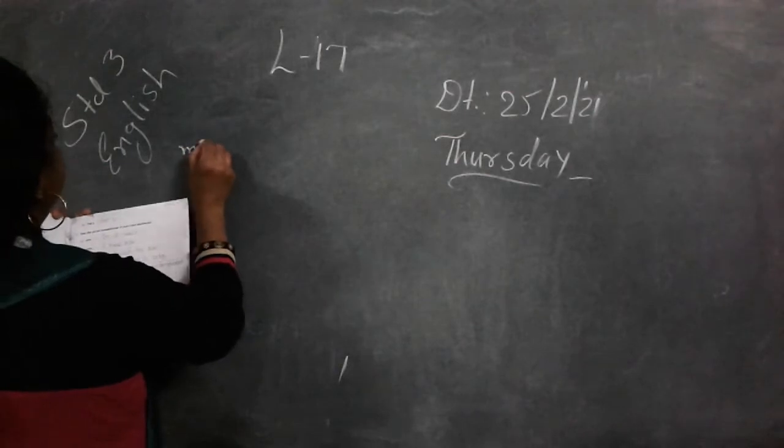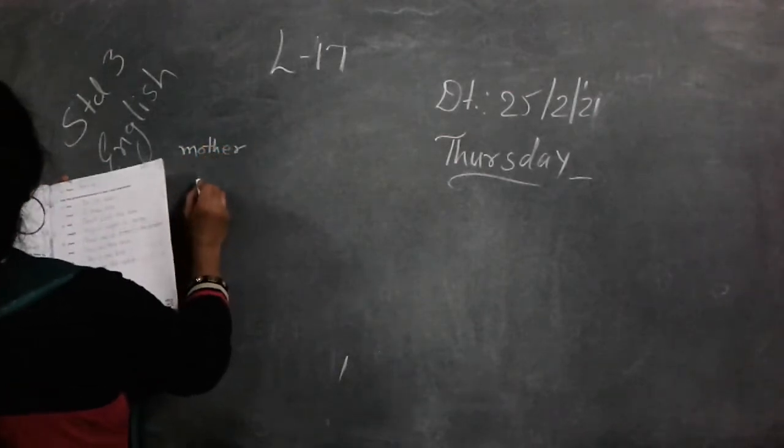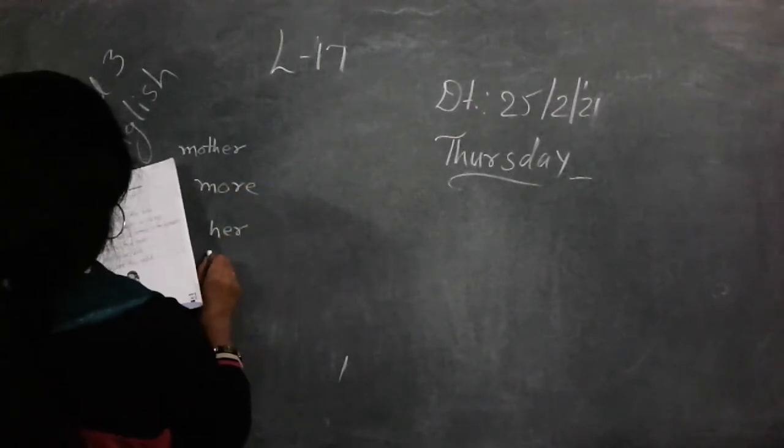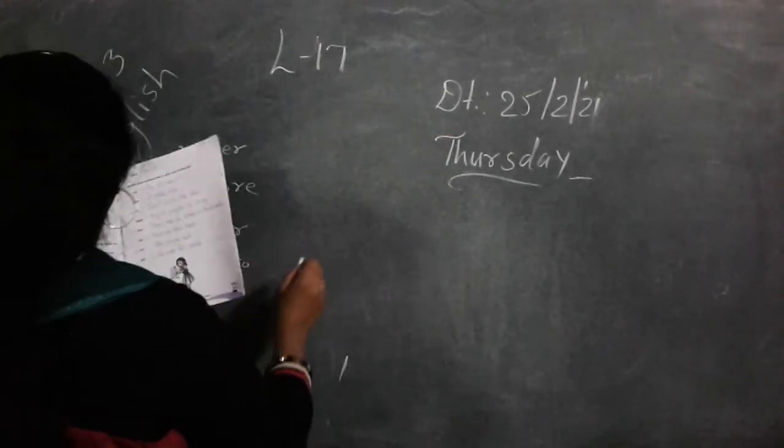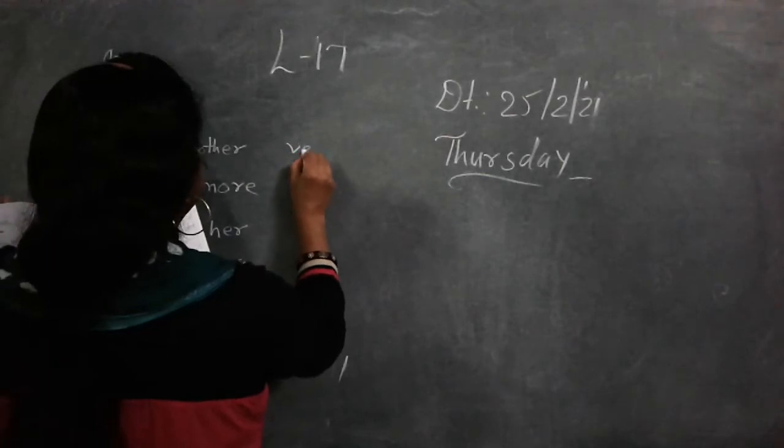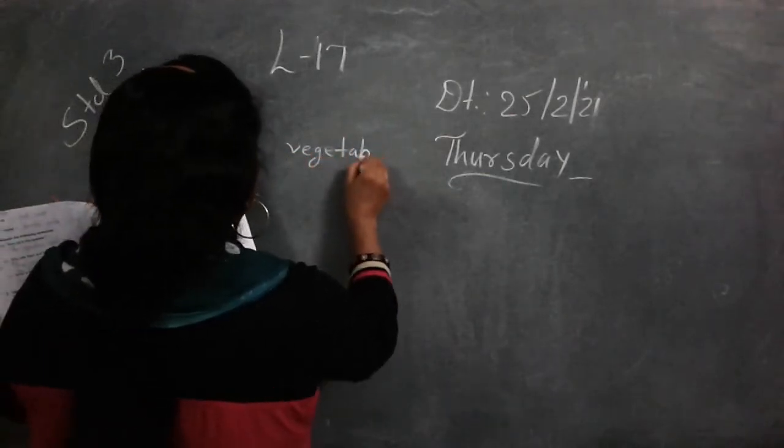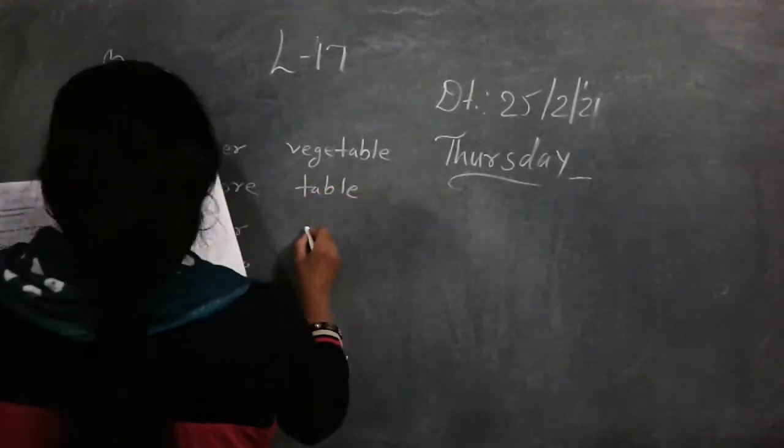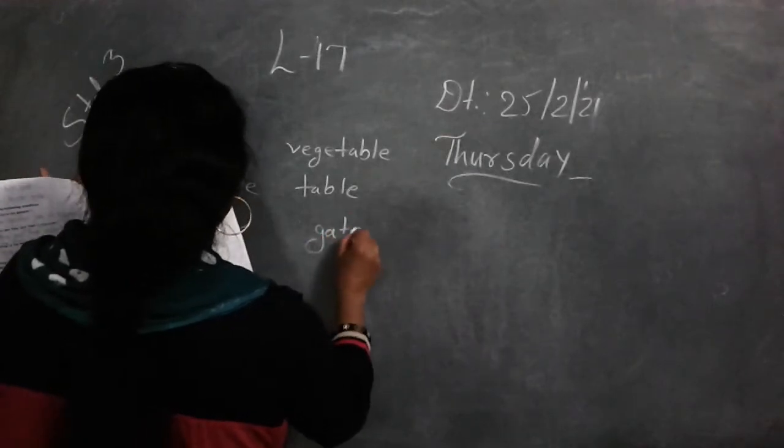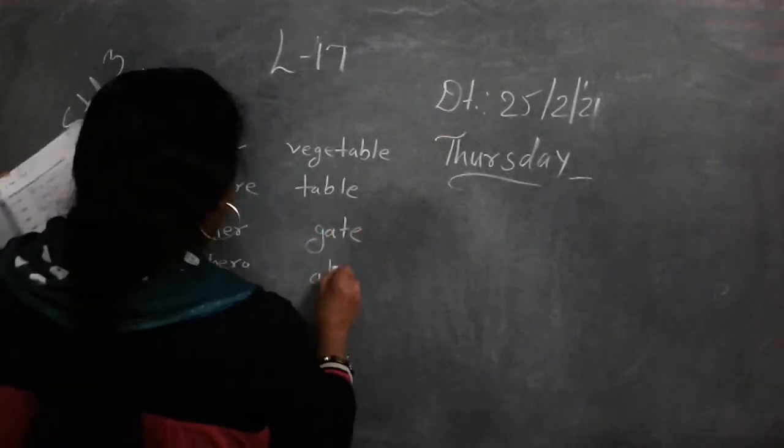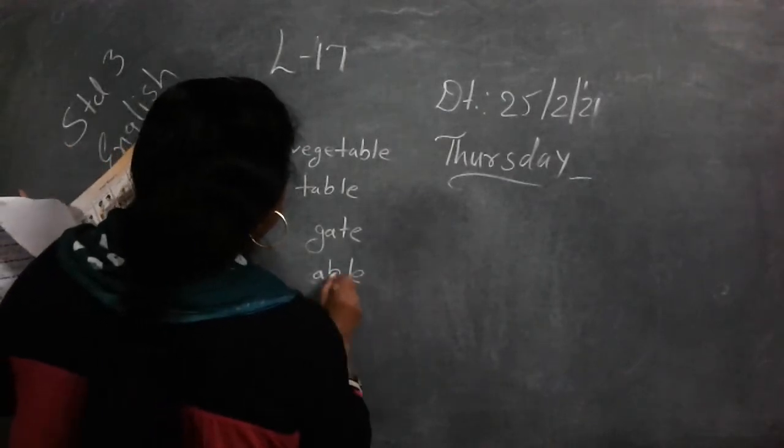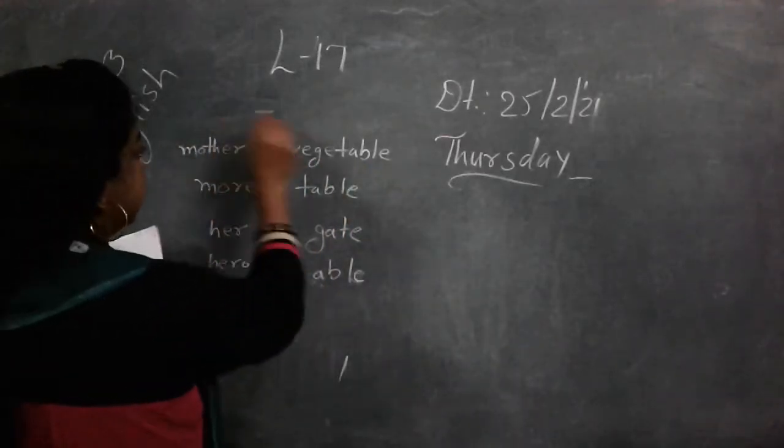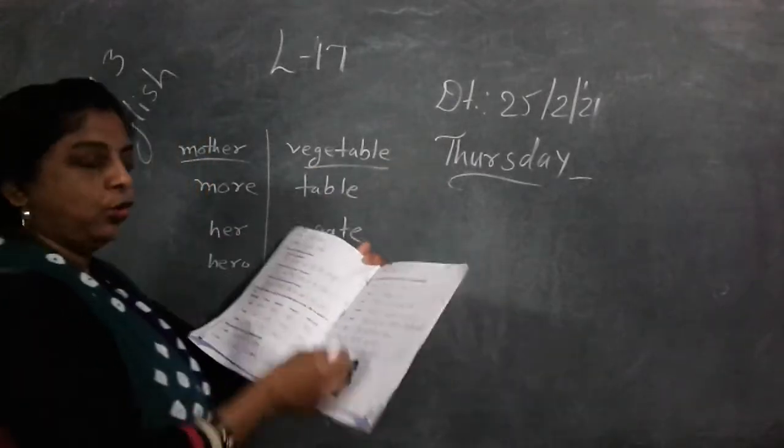First is mother. M-O-T-H-E-R. More, M-O-R-E. Her, H-E-R. And Hero, H-E-R-O. Second is table. T-A-B-L-E. Able, A-B-L-E. Then Gate, G-A-T-E. And last one is beat, B-E-A-T.